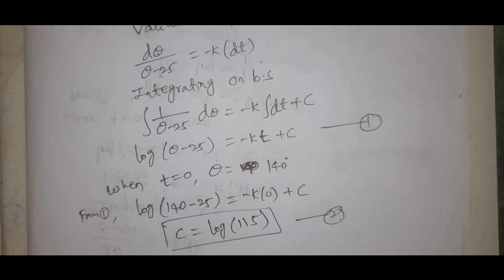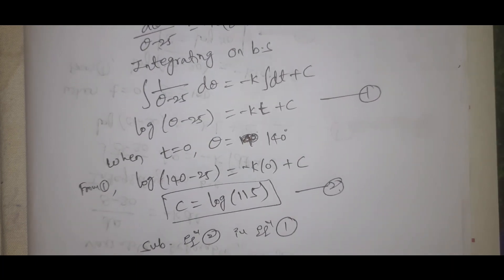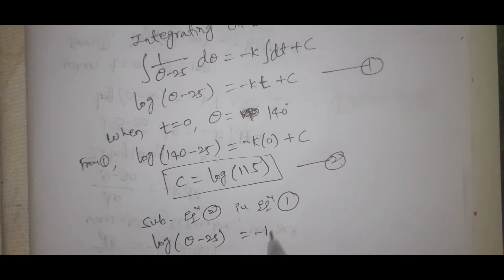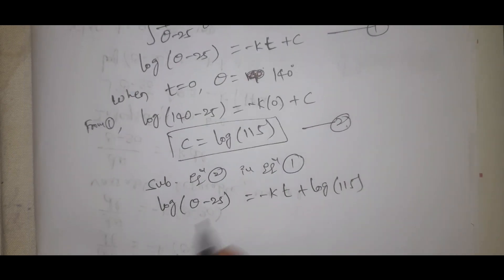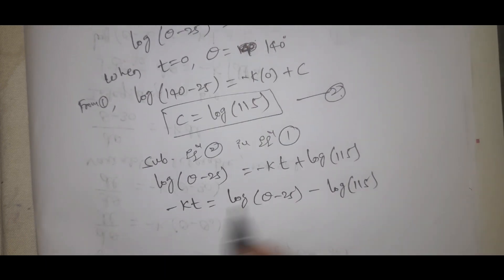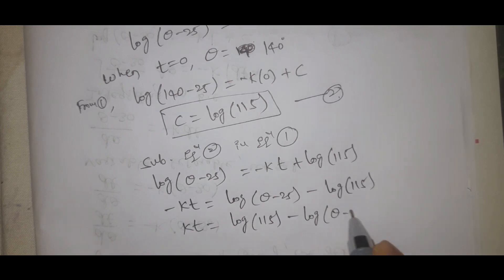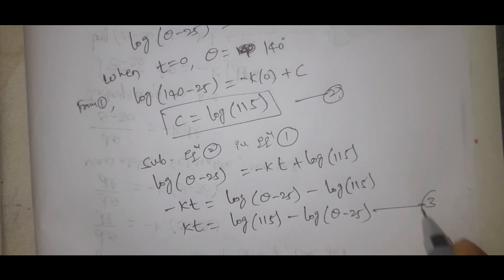Substituting equation 2 into equation 1: log(theta minus 25) equals minus kt plus log(115). Rearranging: kt equals log(115) minus log(theta minus 25). This is equation number 3.